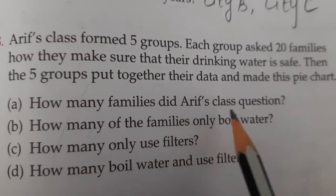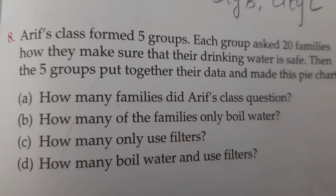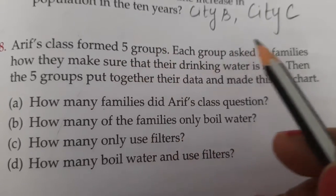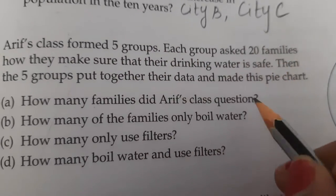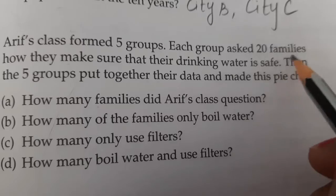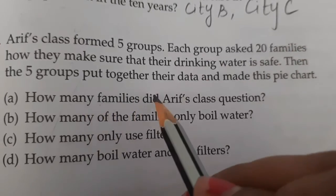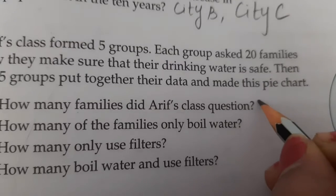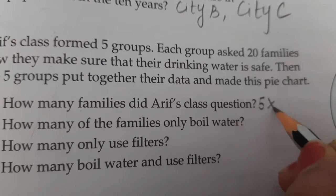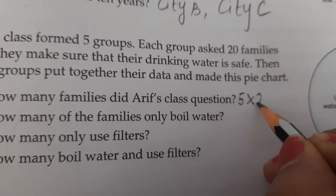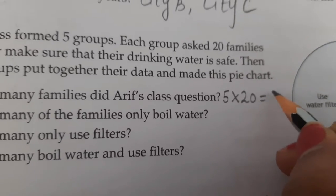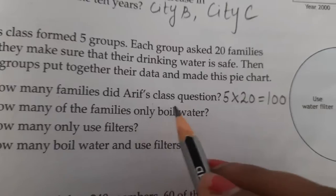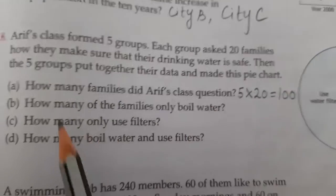How many families did Arif's class question? Arif's class formed 5 groups and each group asked 20 families. So 5 groups times 20 families each gives us 100 families total. How many families did Arif's class question? 100 families.